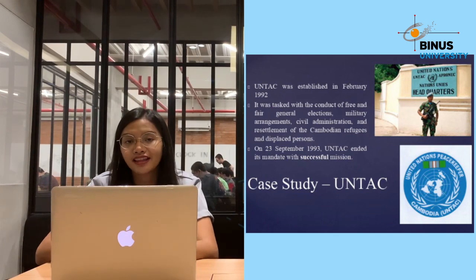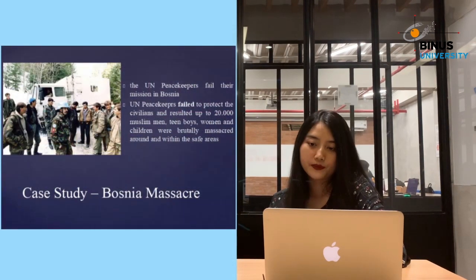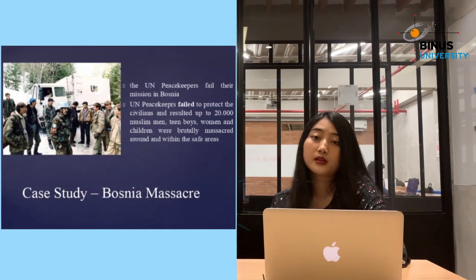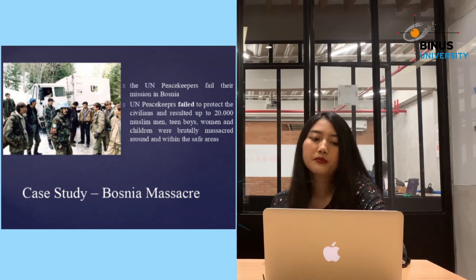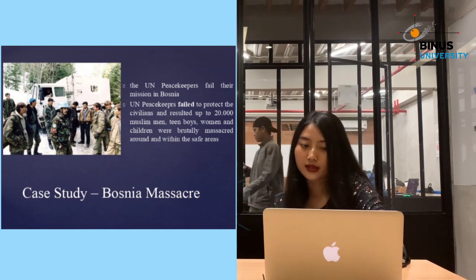UNTAC achieved its primary objective of organizing and conducting free and fair elections, and also succeeded in removing the Cambodian conflict as a source of regional tension. However, it is still possible for UN peacekeepers to fail their mission, as happened in Bosnia — often called the Bosnia massacre — in 1995. The UN peacekeeping force failed to protect civilians, and as a result up to 20,000 Muslim men, teen boys, women, and children were brutally massacred around and within the designated safe areas.